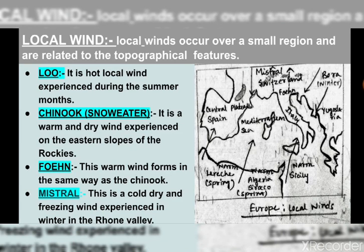Let us learn about local winds. Local winds occur over a small region and are related to the topographical features and local pressure conditions of that particular area. The first important local wind is Lu — a hot local wind experienced during the summer months. It consists of extremely dry and hot winds that blow out of the desert into the adjoining plains of northwest India, raising temperatures in summer in places like Delhi, Punjab, and Haryana.